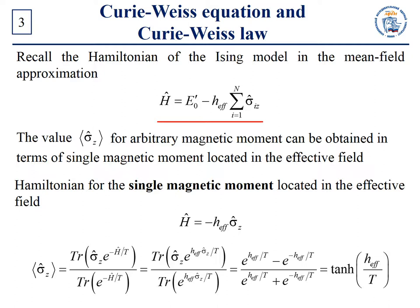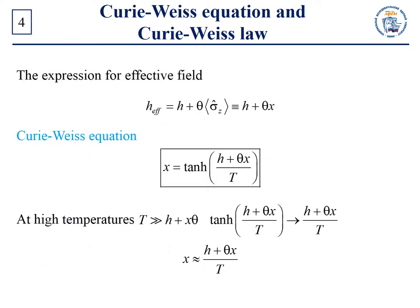The Hamiltonian for the single moment located in the effective field has the following form. Therefore, σ_z can be obtained in the following way. Recall the expression for the effective field. Therefore, the expression for x takes the following form. Such a dependence of x is referred to as the Curie-Weiss equation.